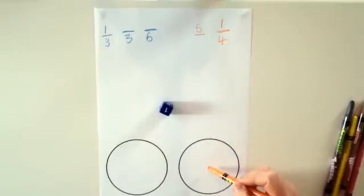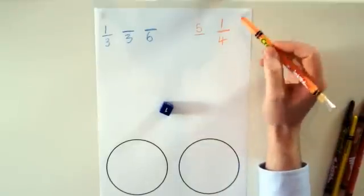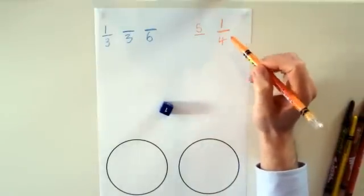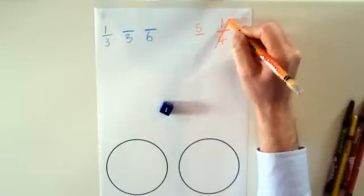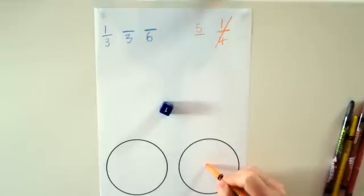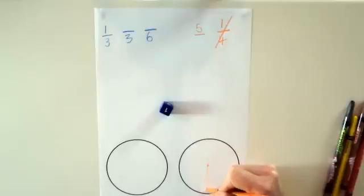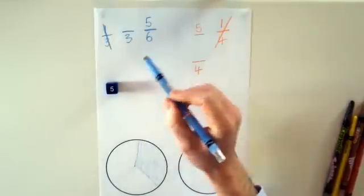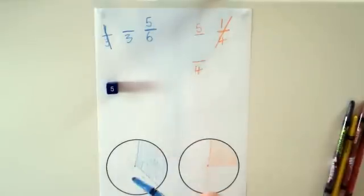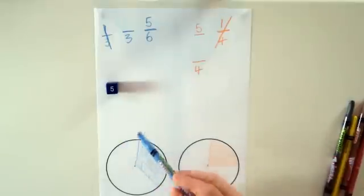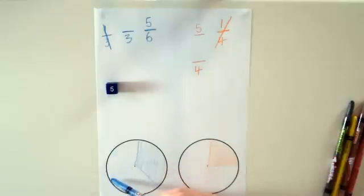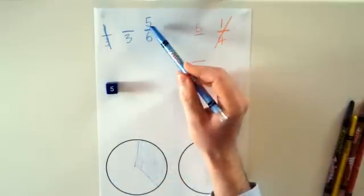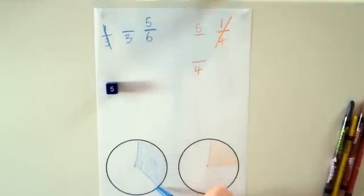The aim of the game is to be able to shade your complete shape before the other player. To do this, you can use the fractions you've created. So orange has created a quarter. They're going to cross that out because they're about to use it, and then need to divide the shape up into quarters and shade in one quarter. Blue can make five sixths using the five, but they can't use that fraction to colour their shape. They can only use fractions that will fit inside the space that they haven't shaded yet, and five sixths is too big because they've already shaded a complete third.